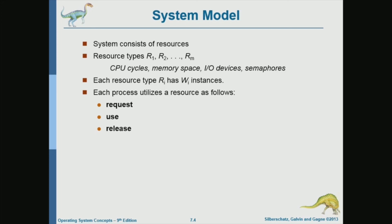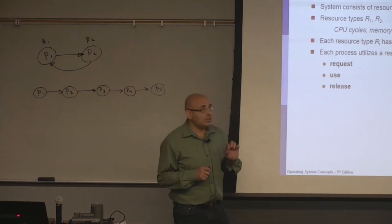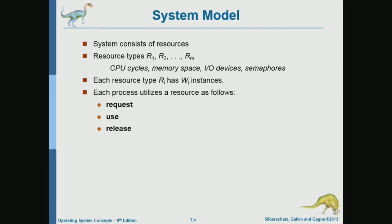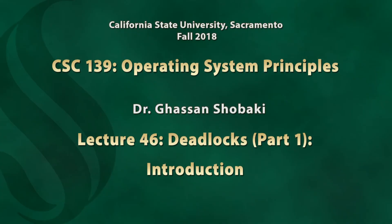In this chapter, our analysis will be abstract. We will assume that a process uses certain resources that we call R1, R2, through Rm. These resources can be CPU cycles, memory space, IO devices, semaphores, et cetera. Each resource has a certain number of instances — not necessarily one. And processes request resources, use resources, and release resources.